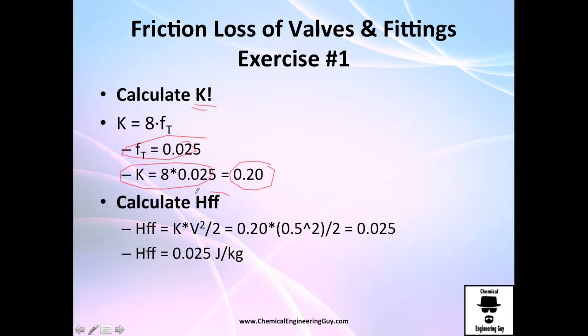But we are not calculating K value—we are going to calculate the energy loss due to this friction. And this K value is 0.20. The velocity we have, divided by 2, and it is right here: 0.025 joules per kilogram is the loss that you're going to expect in that gate valve.